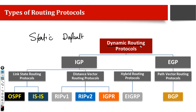Today we will discuss different types of routing protocols. Mainly, routing protocols are divided into two categories: one is called IGP — Interior Gateway Protocol — and the second one is called EGP — Exterior Gateway Protocol. These are the two broad categories of dynamic routing. IGP means the routing protocols which are used within one autonomous system.